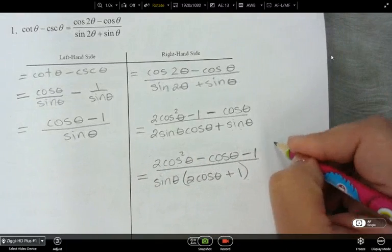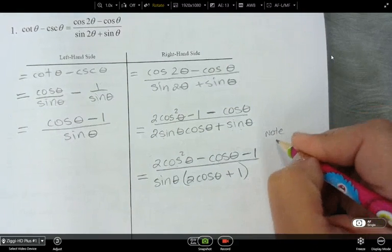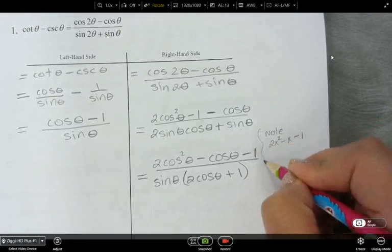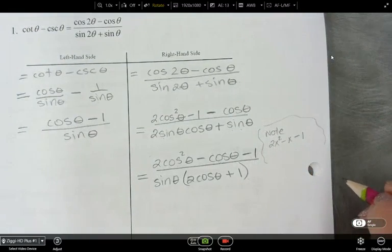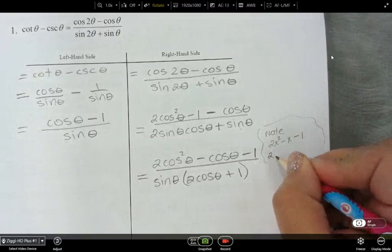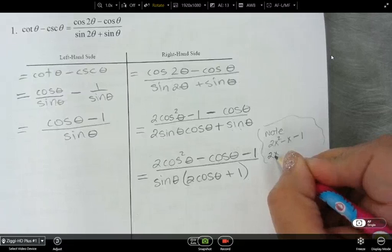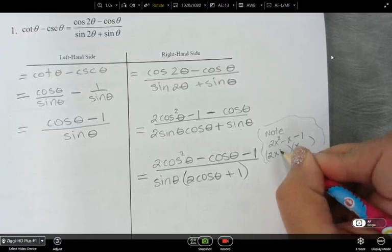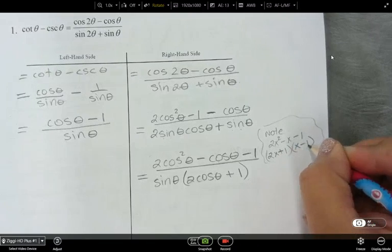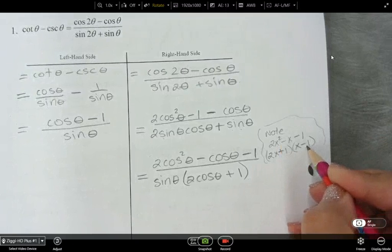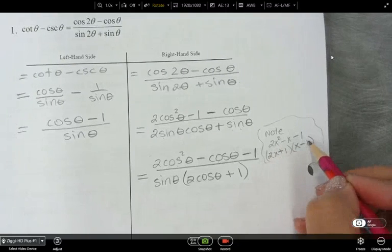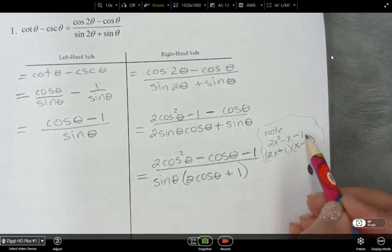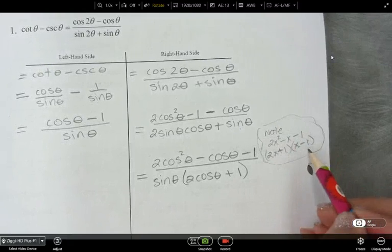I can write note 2x squared minus x minus 1. How would you deal with this? You would factor it. So how would you factor this? It would be 2x, and then x. And then maybe let's try plus 1 and minus 1. Does that work? So that's 2x squared. That's minus 2. That's plus 1x. So that gives me the minus x, and that's minus 1.